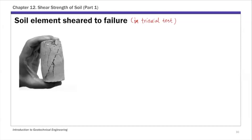Very briefly, in a triaxial test you first apply some confining stress, called sigma three (or sigma three prime in effective stress). Then you shear the soil specimen to failure by applying an axial or vertical loading on top, called sigma one (or sigma one prime in effective stress). So you are shearing the soil to failure by applying that axial loading.